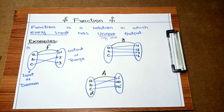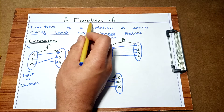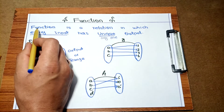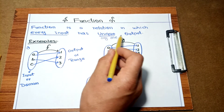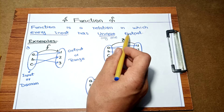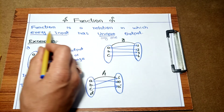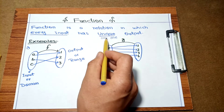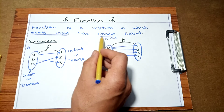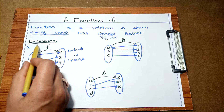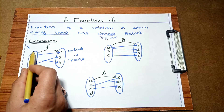Welcome to my YouTube channel. In this video we will discuss function and its examples. A function is a relation in which every input has a unique output. The main concept in this definition is 'unique' — unique means only one output per input.